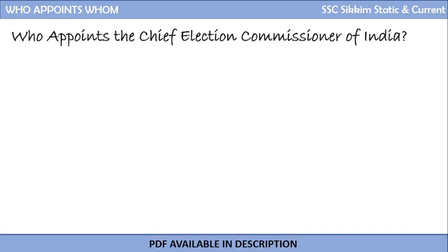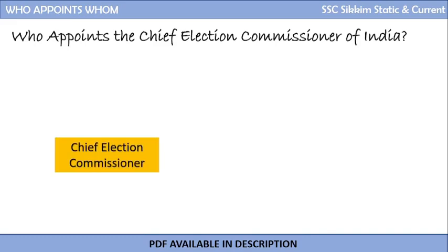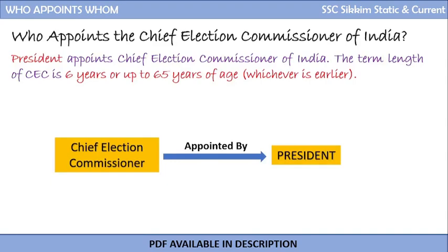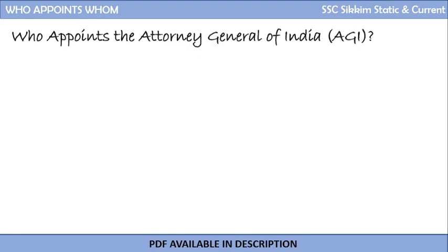Who appoints the Chief Election Commissioner of India? Again, the answer is the President. The Chief Election Commissioner of India is appointed by the President, and the Chief Election Commissioner's term is six years or up to 65 years of age, whichever is earlier.